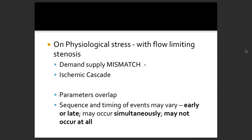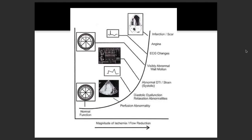Associated parameters may overlap and the sequence and timing of events may change — sometimes early, sometimes late, or sometimes not at all. The magnitude of ischemia progresses: normal function leads to perfusion abnormality, then diastolic dysfunction, then strain and abnormal DTI, then visibly abnormal wall motion, ECG changes, then angina, and finally infarction or scar.